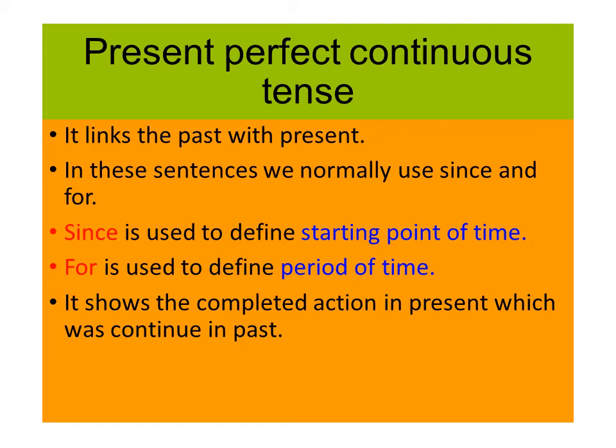In these sentences we normally use 'since' and 'for'. 'Since' is used for the starting point of time, and 'for' is used for the period of time. This tense is used for a completed action which we have started in the past and is still going on.